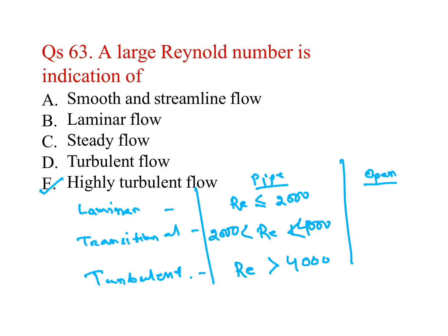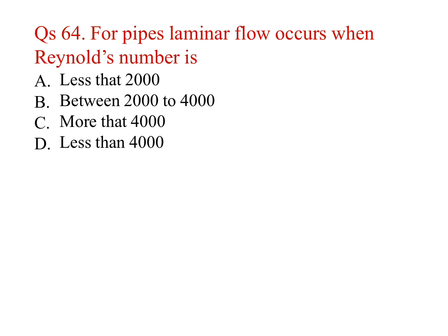For open channel flow: laminar — Reynolds number less than or equal to 500; transitional — between 500 and 1000; turbulent — greater than 1000. For pipes, laminar flow occurs when Reynolds number is less than 2000.